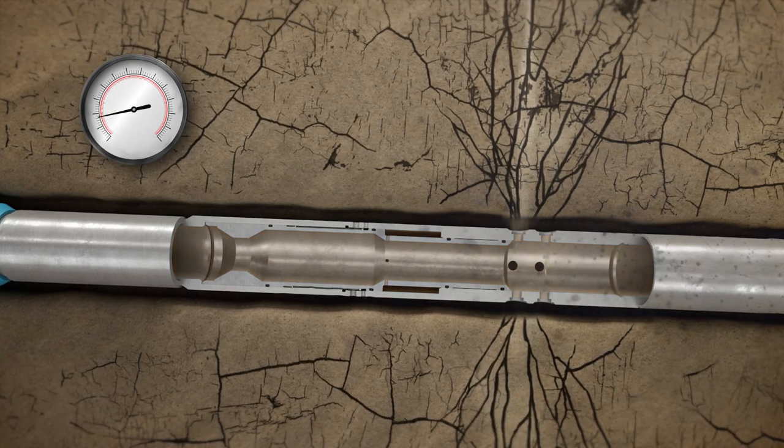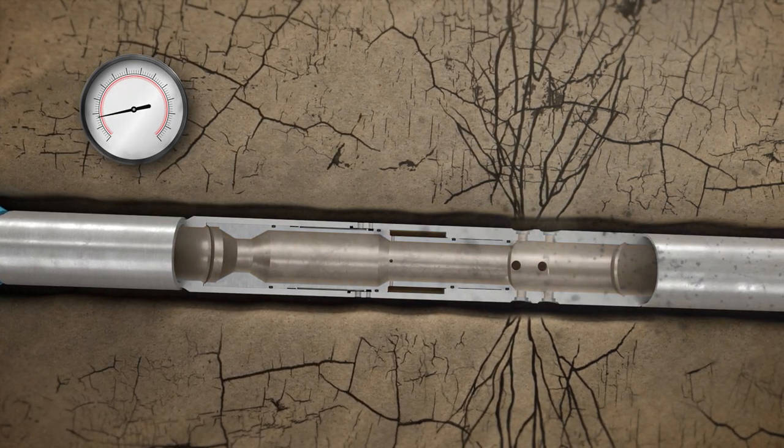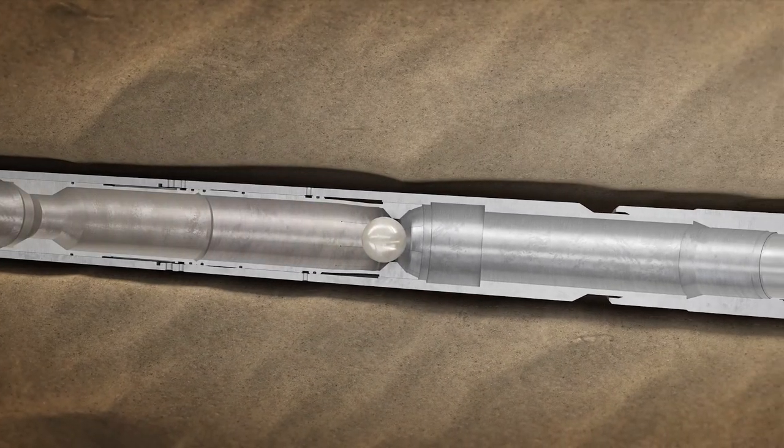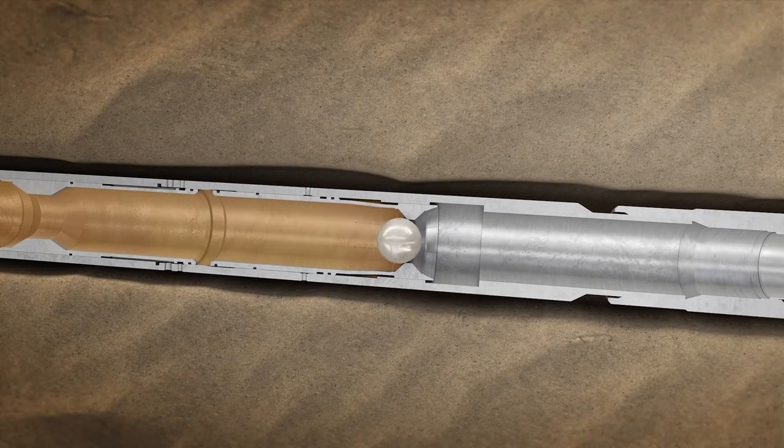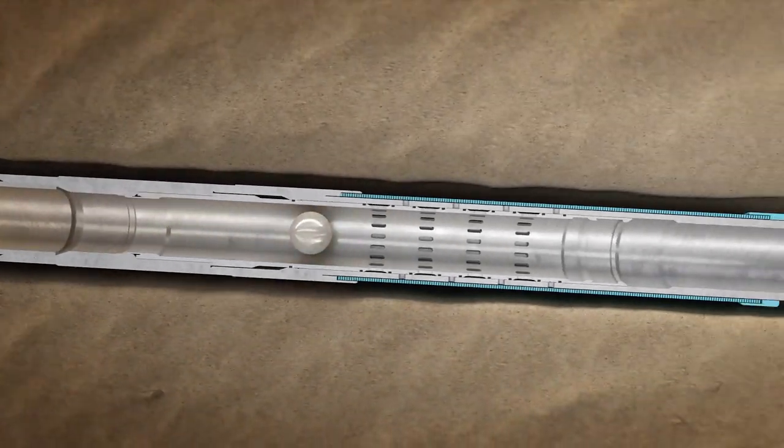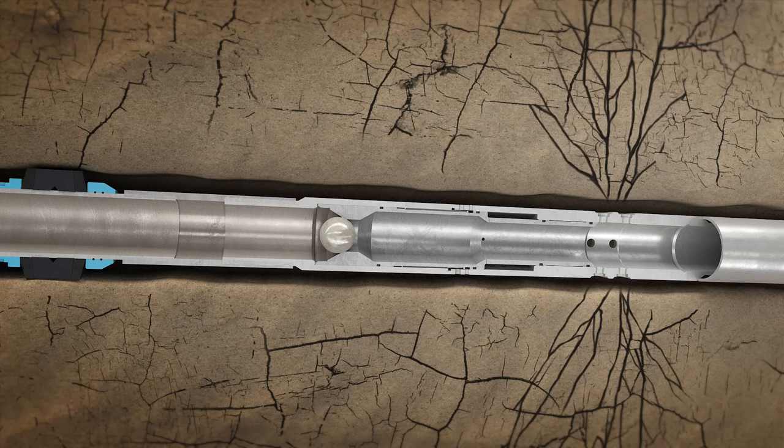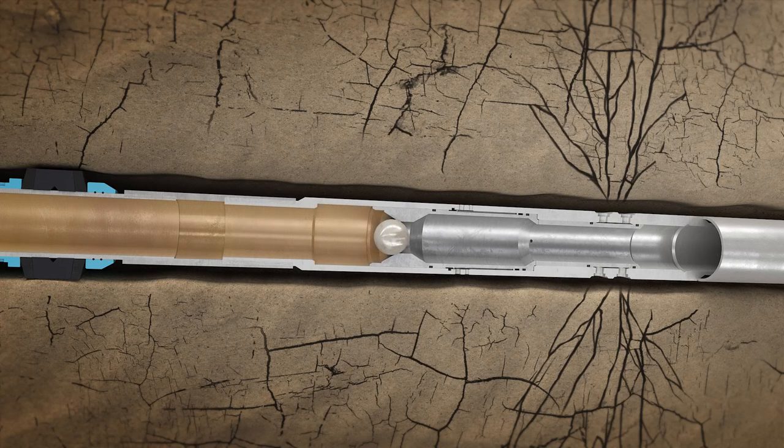Once opened and injectivity established, the first ball is launched. This ball opens the first stage above the toe sleeve by shifting the Bull Mastiff FRAC sleeve open, then releasing the ball to travel down and close the toe initiation sleeve.